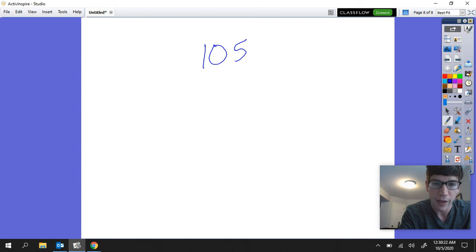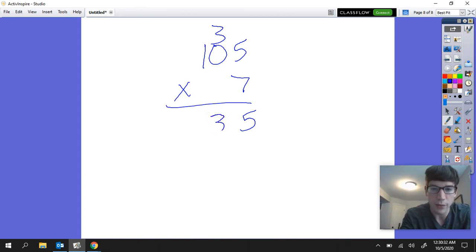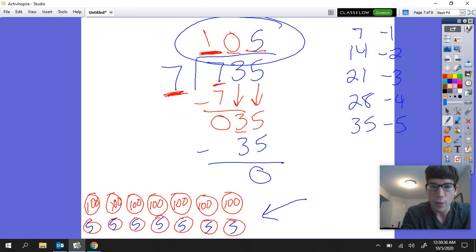Seven times five is 35, seven times zero is zero, plus three is three, and seven times one is seven. We end up with 735 which was the same number that we started with here.